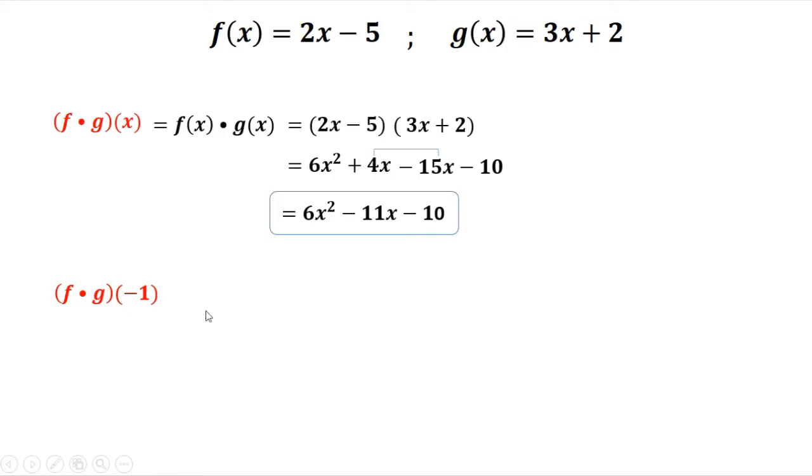Now for the second example, we have f of negative 1 times g of negative 1, so our x now is equal to negative 1.